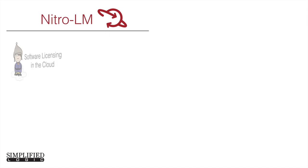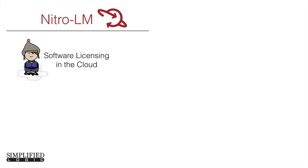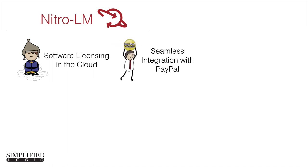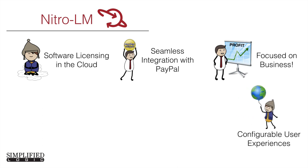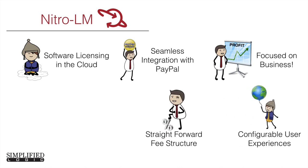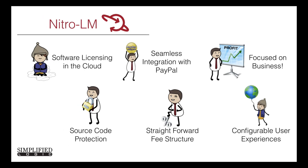NitroLM is software licensing in the cloud. It is a tool we created to license our own tools and to also help other commercial software applications license their stuff. It is integrated with PayPal, and it is focused 100% on helping companies do their business. It also enables configurable license experiences, has a very straightforward fee structure, and also helps with source code protection.